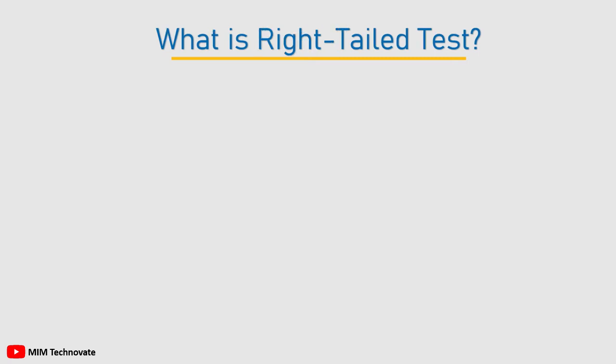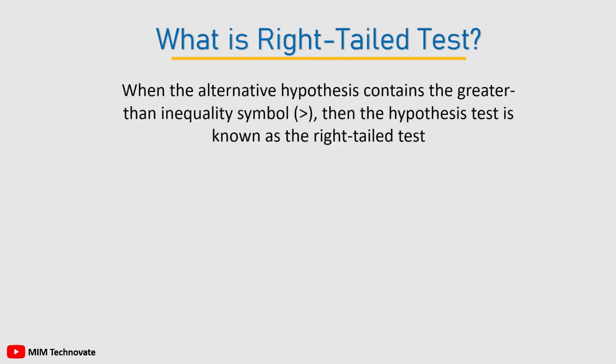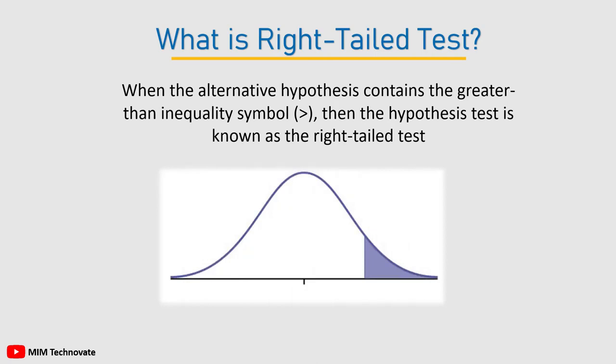What is a right-tailed test? When the alternative hypothesis contains the greater than inequality symbol, then the hypothesis test is known as the right-tailed test.